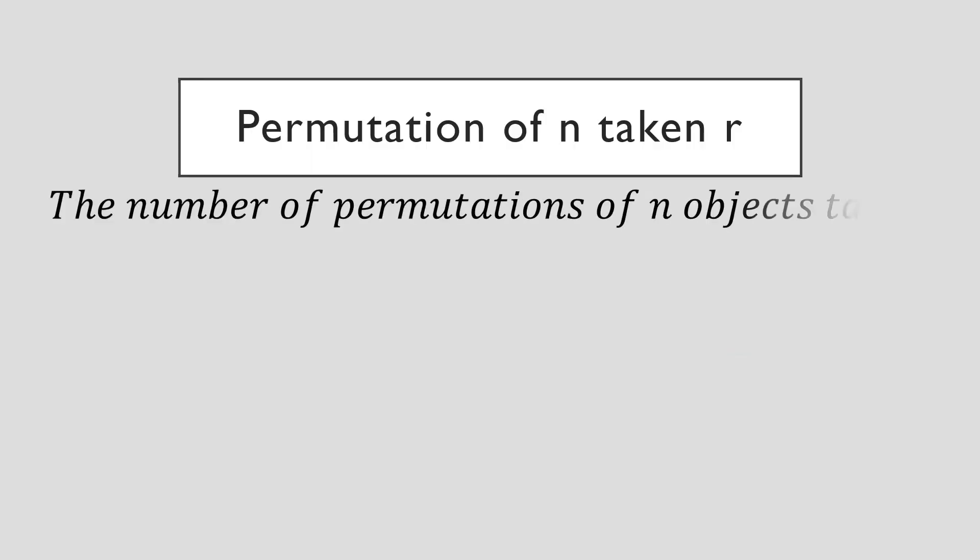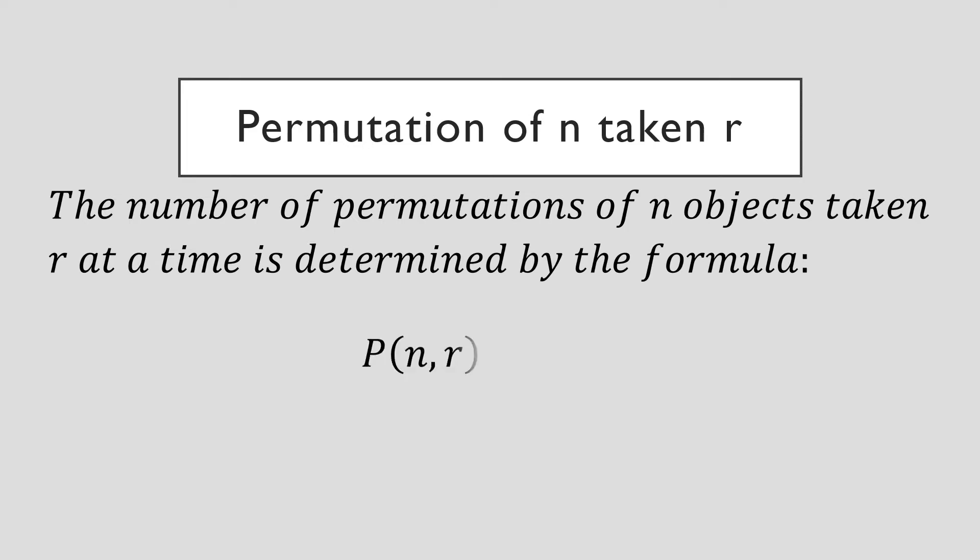For permutation of n taken r, the number of permutations of n objects taken r at a time is determined by the formula: P of n taken r equals n factorial divided by quantity n minus r factorial, where n is greater than or equal to r.